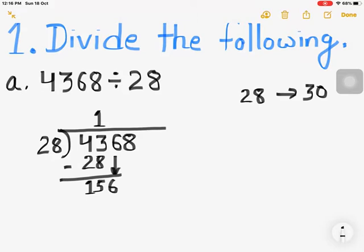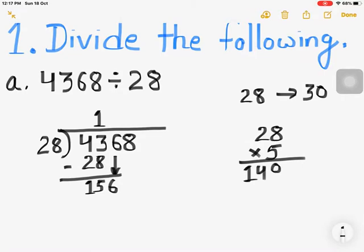How many 30s are there in 156? 4 times 30 is 120 and 5 times 30 is 150. So let us multiply 28 by 5 — you get 140 as the product. Write down 5 as the quotient, and subtract the product 140 from 156. Let us find out the remainder.